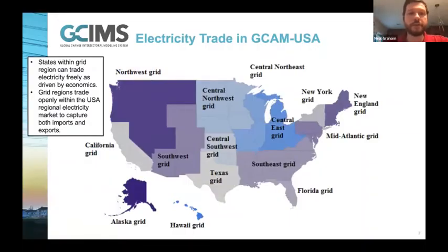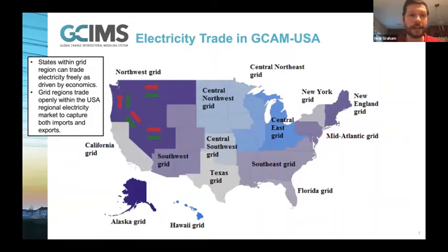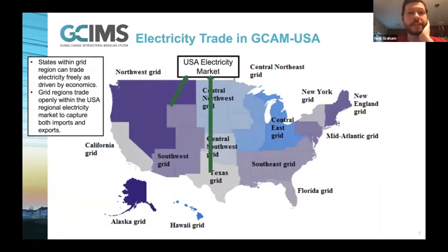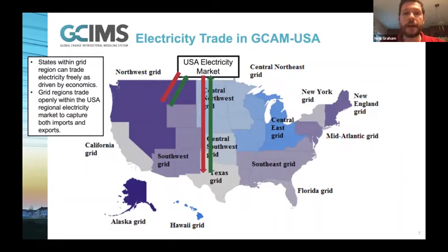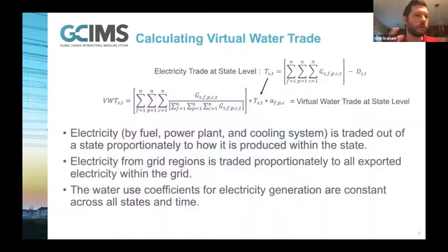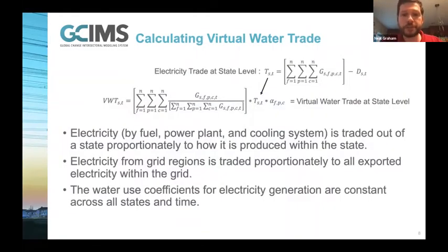States within any grid region - each of the 15 grid regions - can trade freely amongst each other, driven by overall economics. When we look at trade between overall grid regions, grids can export electricity to a generalized USA electricity market and can also import from that market. Any unmet demands within a grid can come from the generalized USA market. Electricity is traded out of states proportionately to how it's produced, and that is carried forward in terms of the water as well - so if a power plant is consuming water and that fuel type is being exported from the region, we can calculate the virtual water being exported as well.